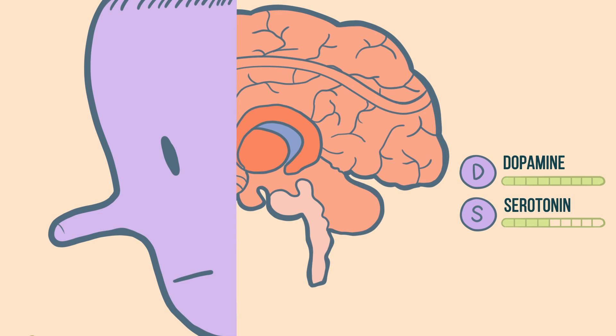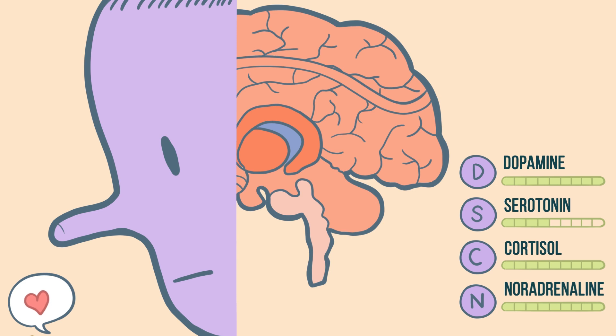Other chemicals released when in love are stress hormones: cortisol and noradrenaline. Both hormones are responsible for a variety of physical symptoms and emotional responses: racing heart, sweaty palms, flushed cheeks, and anxiety.